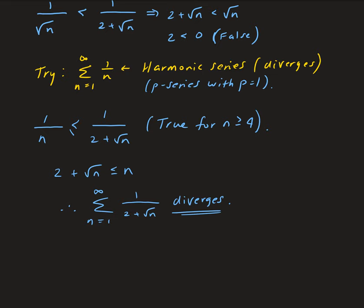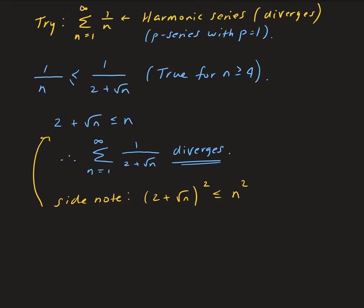As a side note, let's take a closer look at this. If we square both sides: 2 plus root n squared is less than or equal to n squared. Then we're going to get 4 plus 4 root n plus n less than or equal to n squared. You can see that the left-hand side is on the order of n, while the right-hand side is on the order of n squared. So you can clearly see that the left-hand side is not as dominating as the right-hand side.